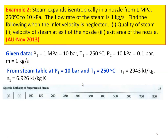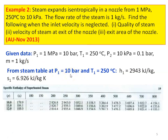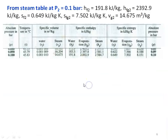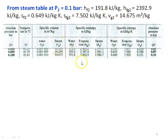From the steam table, it is superheated steam. The enthalpy of superheated steam at 10 bar, 250 degree Celsius is 2943 kilojoules per kilogram, and the specific entropy at 10 bar, 250 degree Celsius is 6.926 kilojoules per kilogram Kelvin — from page numbers 19 and 22. Then from the steam table at P2 equal to 0.1 bar, we note: Hf2 equal to 191.8, Hfg2 equal to 2392.9 kilojoules per kilogram, Sf2 equal to 0.649, Sfg2 equal to 7.502, and Vg2 equal to 14.675 meter cube per kilogram.